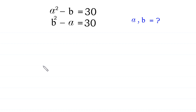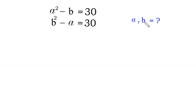Hello, welcome to how to solve this system of equations: a squared minus b is equal to 30, b squared minus a is equal to 30. We need to find all possible values of a and b.